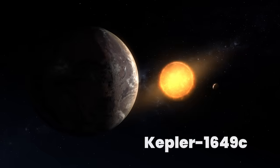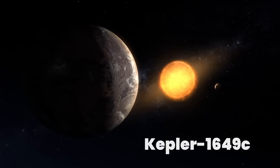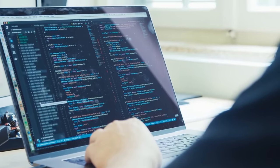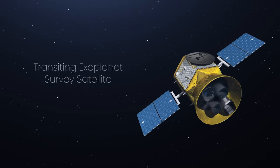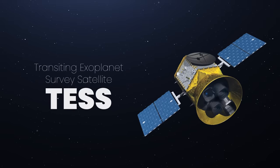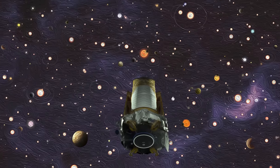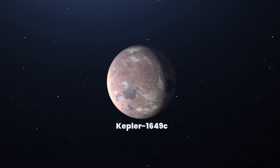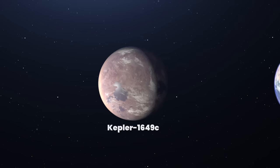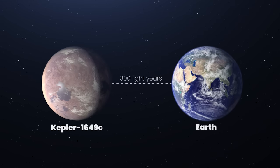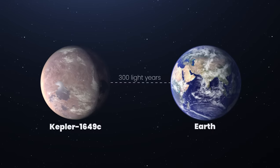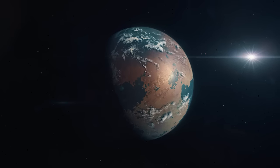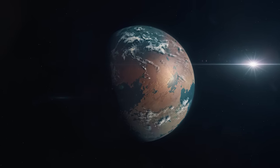One such planet is Kepler-1649c. In mid-2020, while combing through old Kepler data and matching it against new data from the Transiting Exoplanet Survey Satellite, or TESS, astronomers confirmed the existence of another exoplanet with very favorable conditions for life. Kepler-1649c, located 300 light-years from Earth, is very similar to Earth in size and estimated temperature. This newly revealed world is only 1.06 times larger than our own planet.